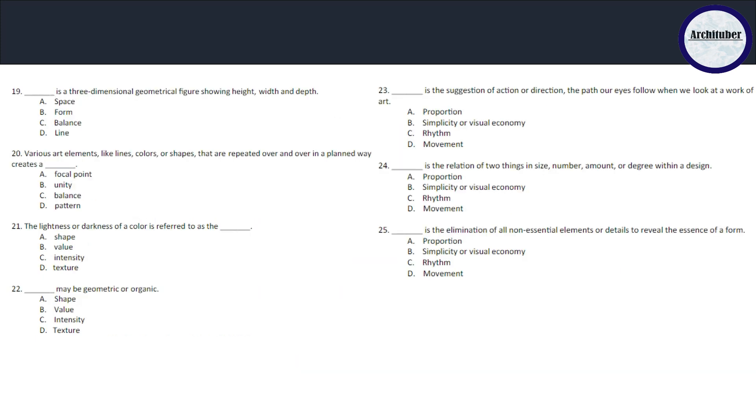A three-dimensional geometrical figure showing height, width and depth - can a space show any three-dimensional space? No. Balance? Line? No. It is form. Form is a three-dimensional object. Various art elements like lines, colors, shapes that are repeatedly repeated over and over in a planned way creates a pattern.